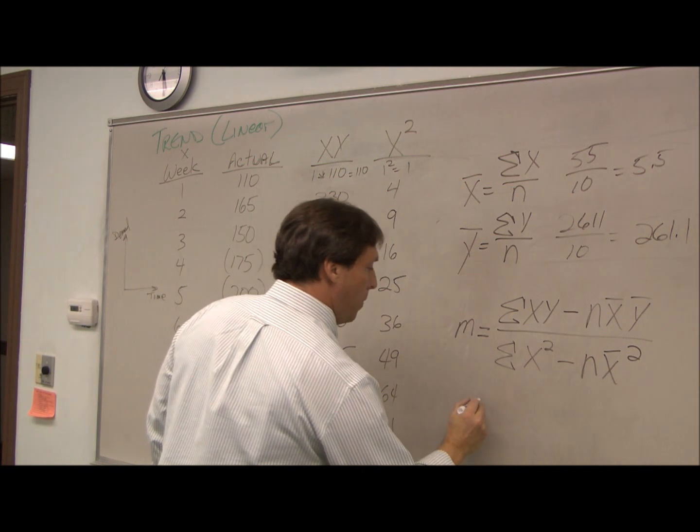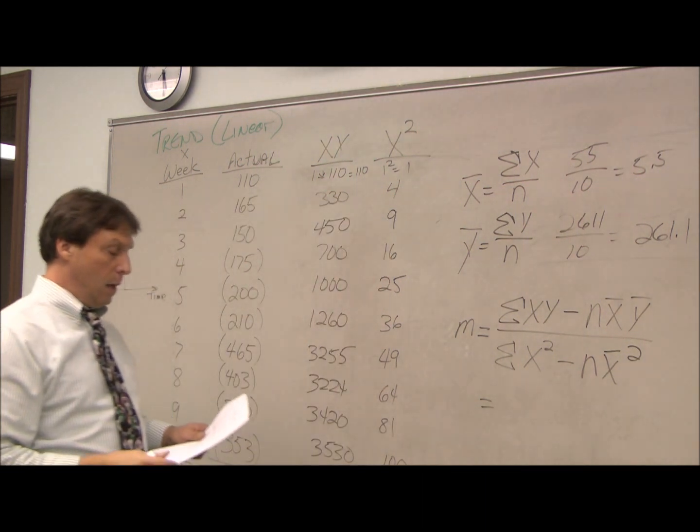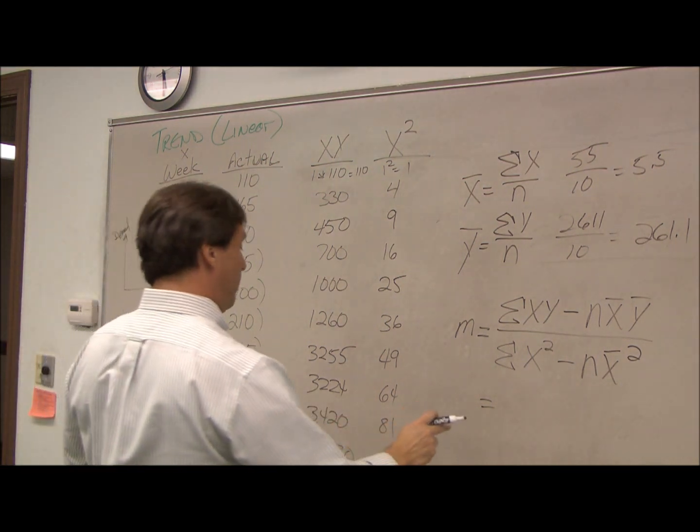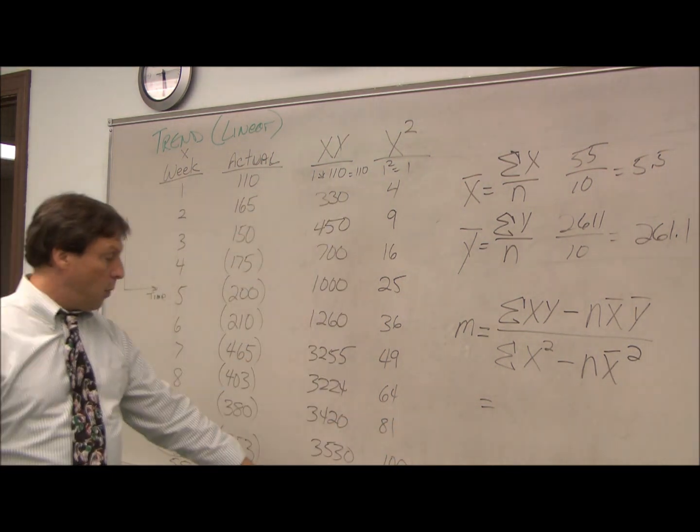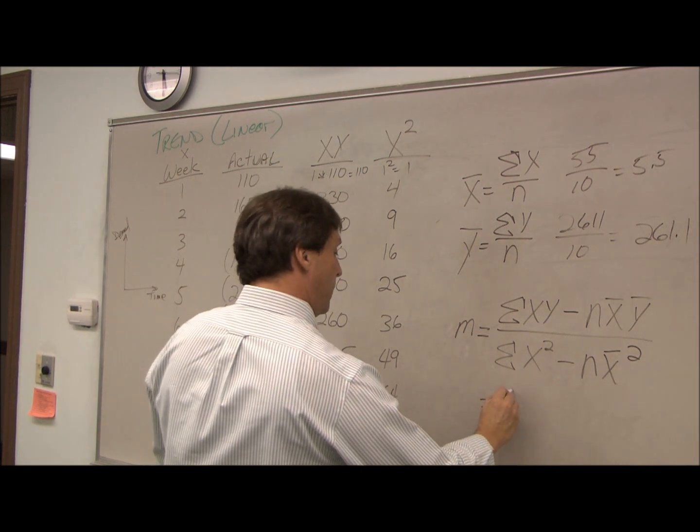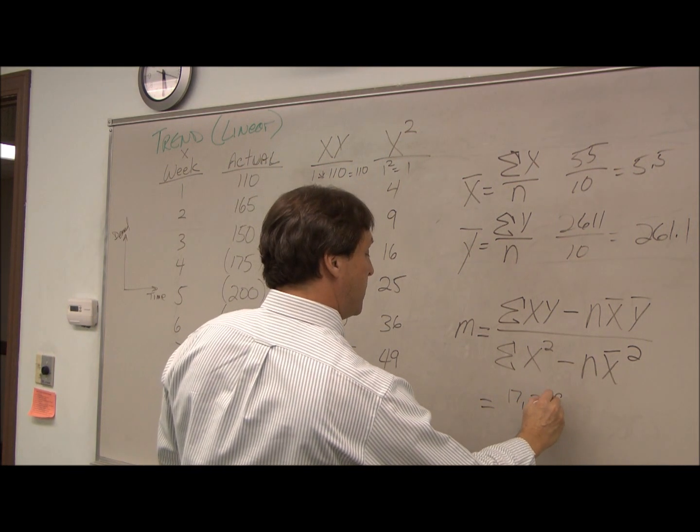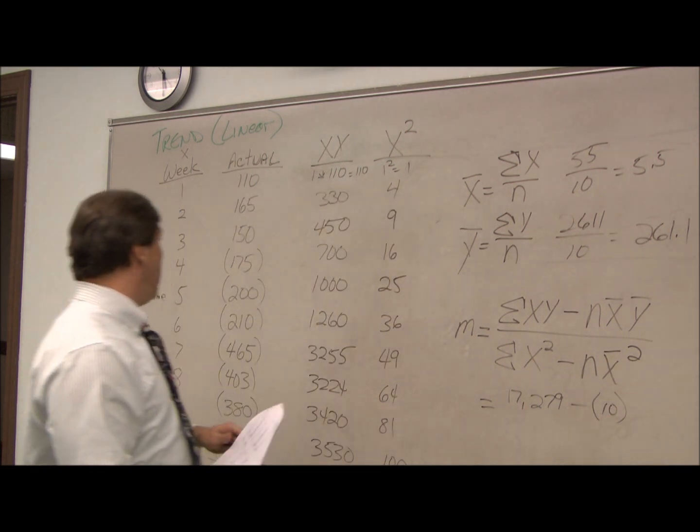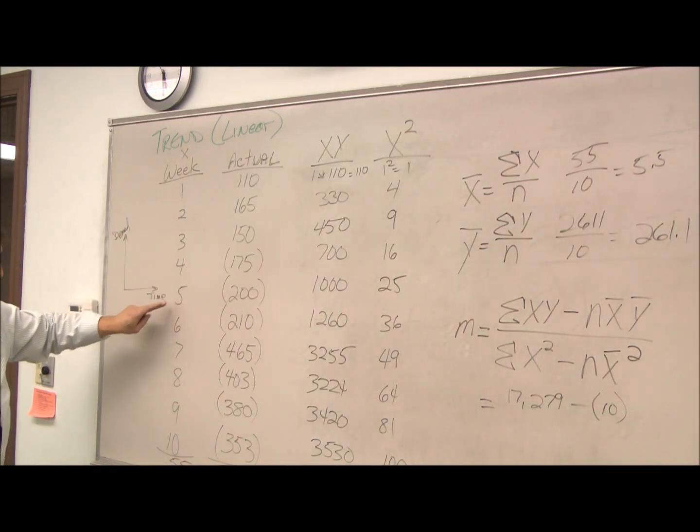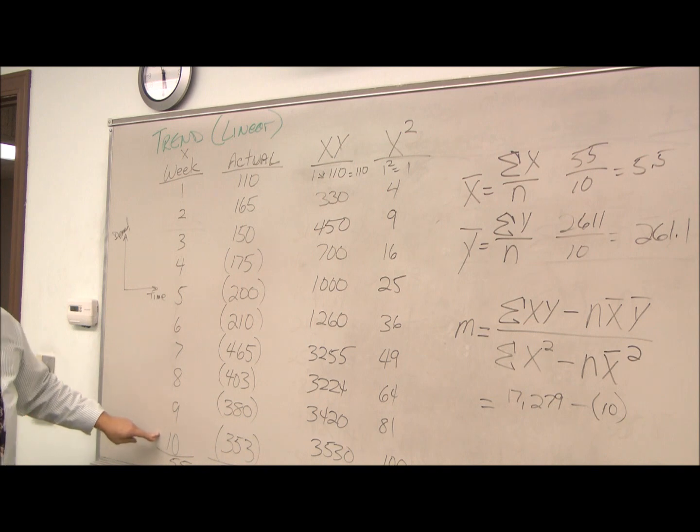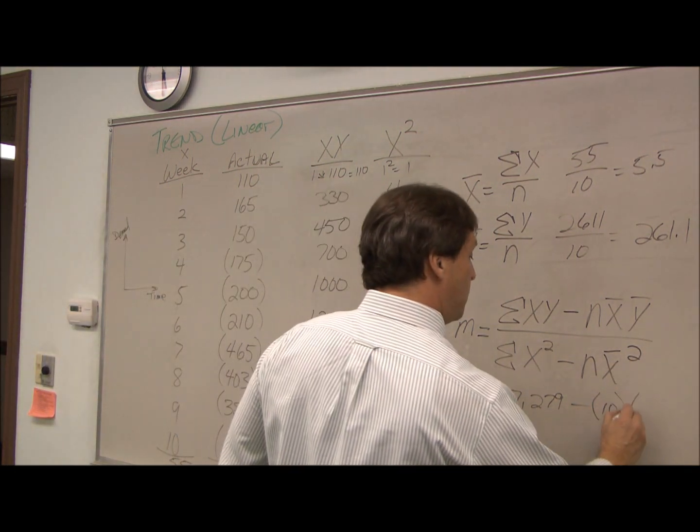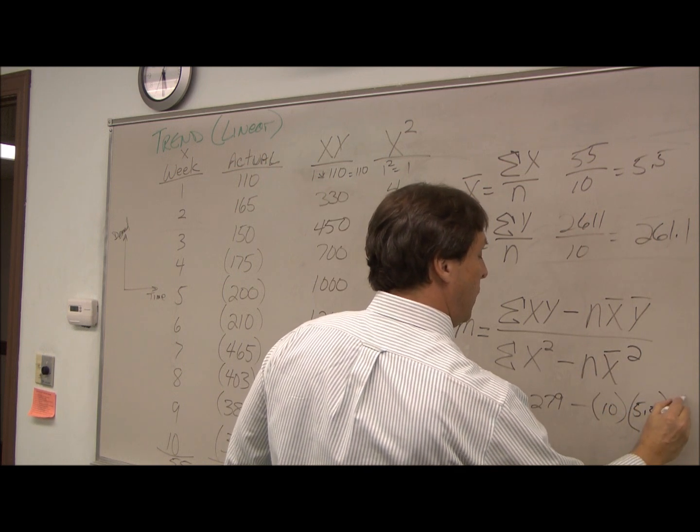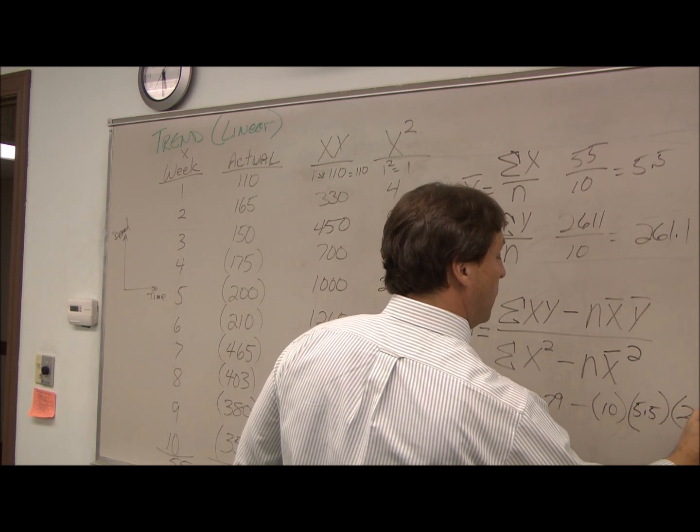Now we just plug the numbers right in. We have the summation of our x and our y's, our 17,279. From that, we went for 10 weeks. So n is our 10. Our x-bar is 5.5. Our y-bar is 261.1.